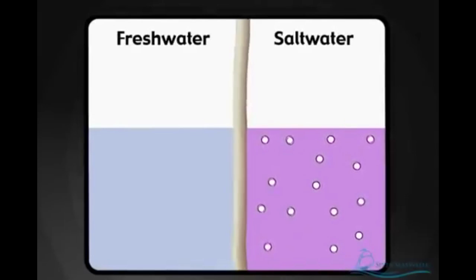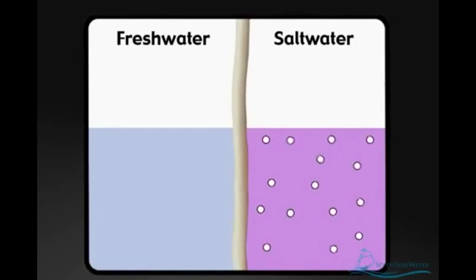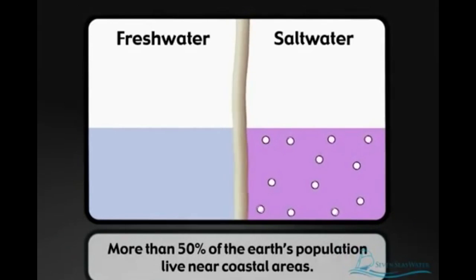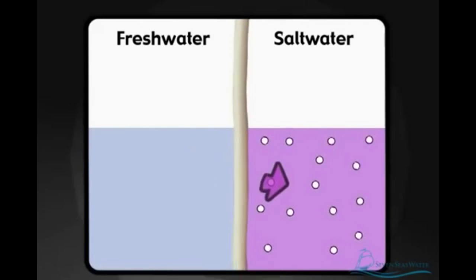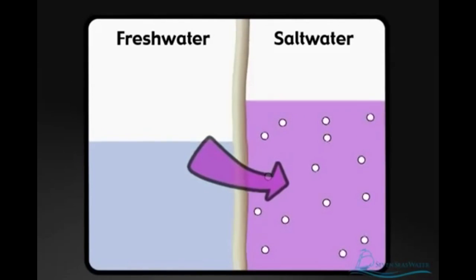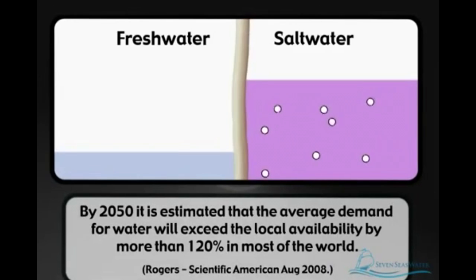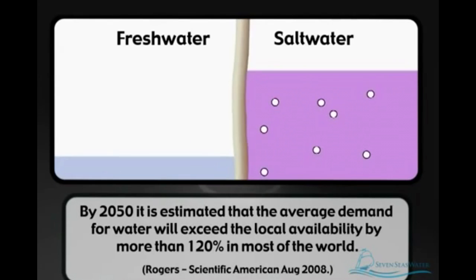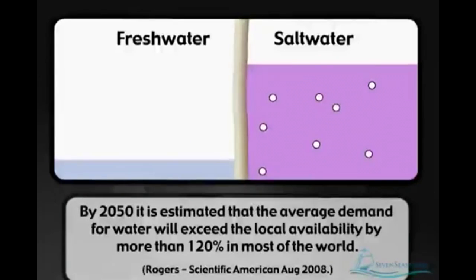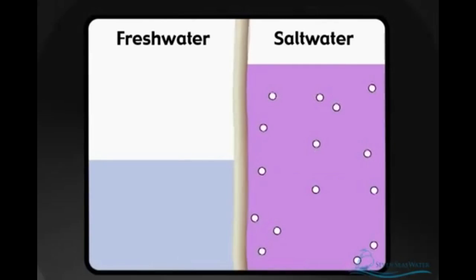Osmosis is a naturally occurring process where a solvent, such as water, passes through a semi-permeable barrier. The semi-permeable barrier, or membrane, allows some things to pass through it but not others. In nature, the direction of flow through the membrane is from a less concentrated solution, such as freshwater, to a more concentrated solution, such as seawater, until equilibrium is reached.